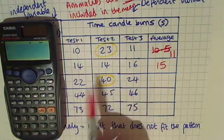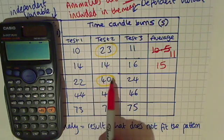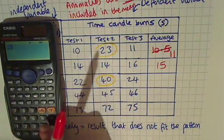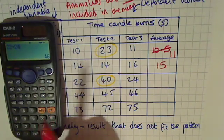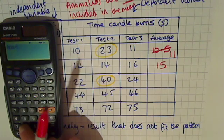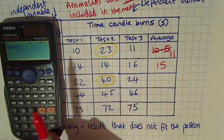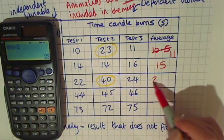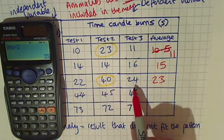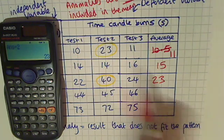For the next row, we've got to ignore our anomaly of 40. So we need to add up the numbers 22 and 24 and then press equals and divide by two because we've used two numbers. Our answer is 23. We'll double check: is 23 close to 22 and 24? Yes, it is. We've calculated it right.